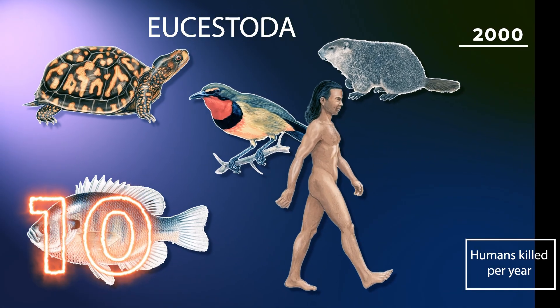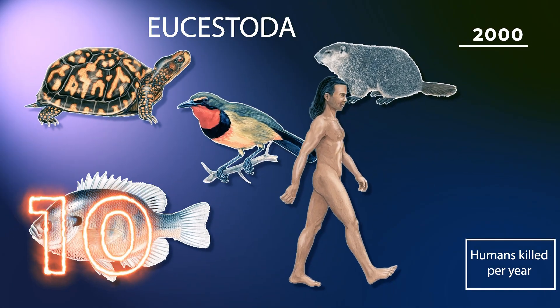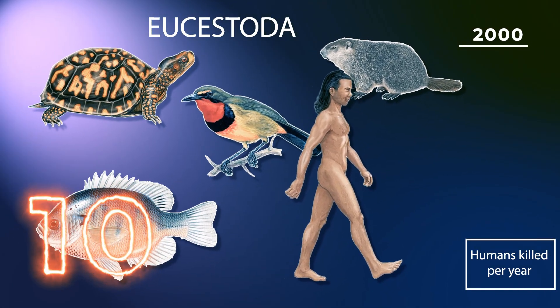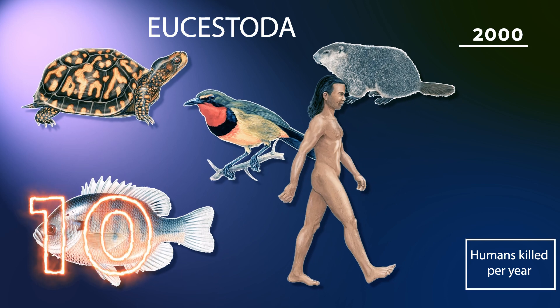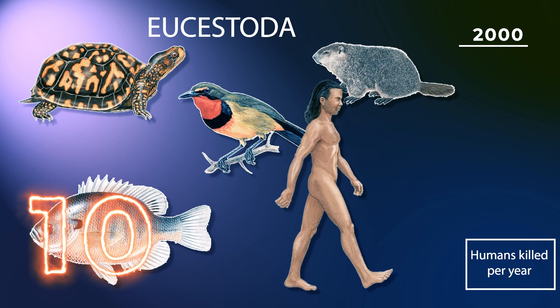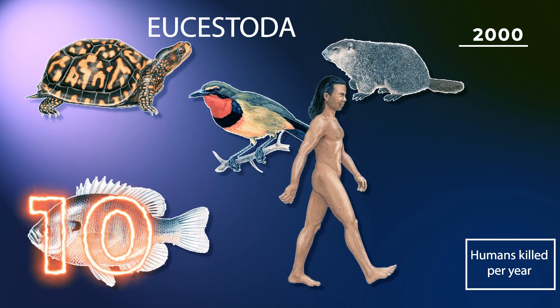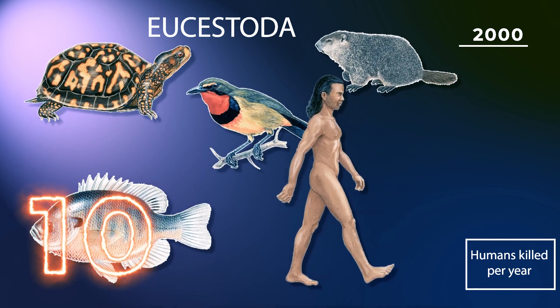After the scolex has differentiated and matured in the larval stage, growth will stop until a vertebrate eats the intermediate host, and then the strobila develops.